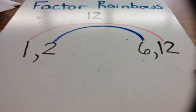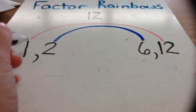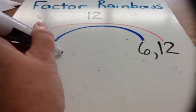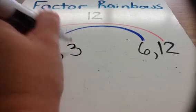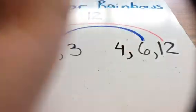I'll go back over to the left, and with my counting, I count 1, 2, the next number is 3. Is there any number times 3 that equals 12? Yes, 3 times 4 equals 12.